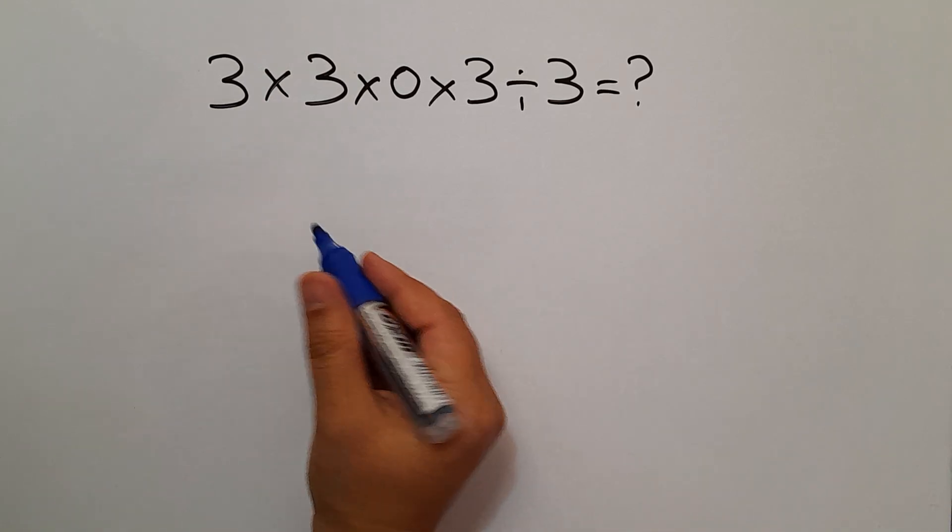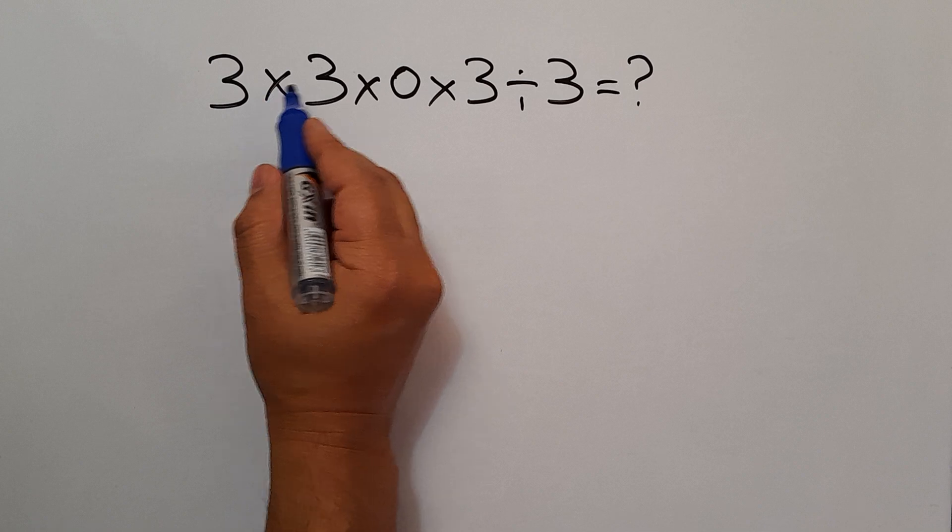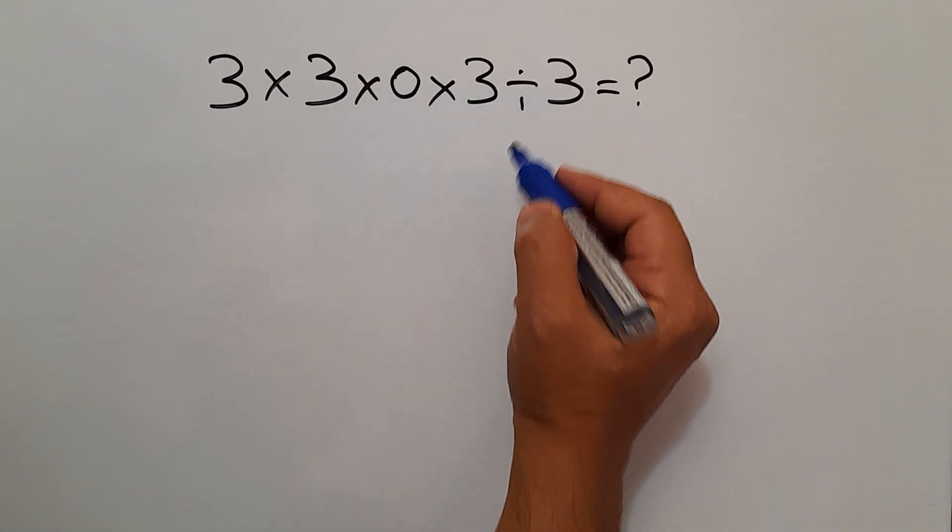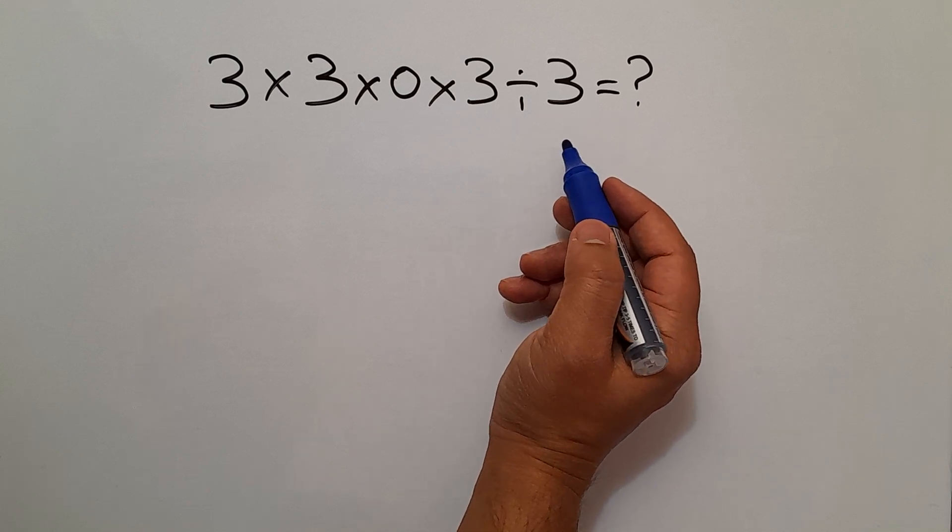Hey guys, and welcome to this video. In this video, we want to find the value of this expression: 3 times 3 times 0 times 3 divided by 3. Are you ready to solve? Let's get started here.